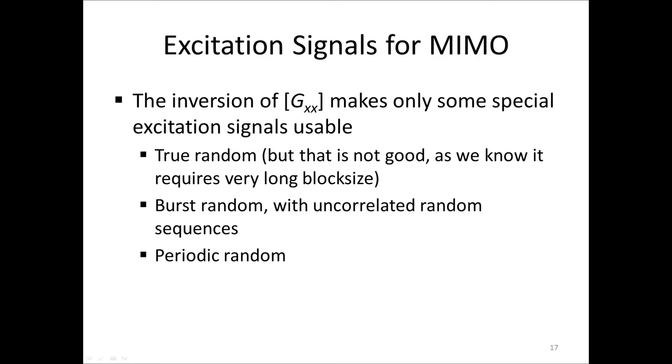To find suitable excitation signals for MIMO estimation, we have to consider the fact that GXX has to be invertible. TrueRandom does work, although it's not a good choice as it requires very long block size. BurstRandom also works fine with uncorrelated random sequences on each channel. Lastly, PeriodicRandom is a new special form of pseudorandom for multiple input applications. And since this is the best excitation signal, we will present that next.